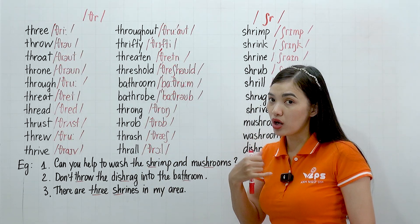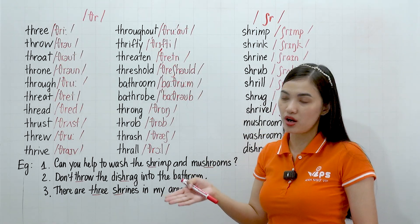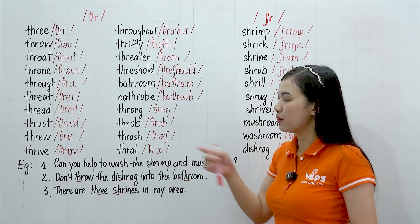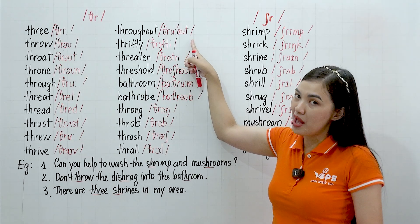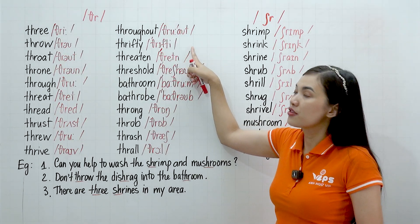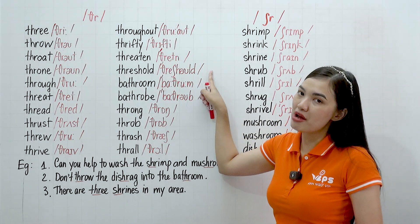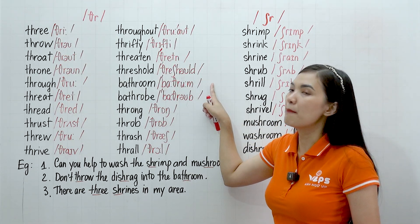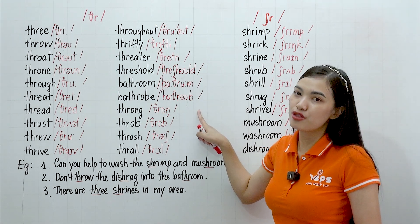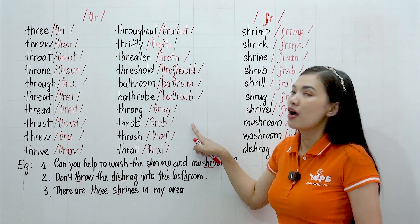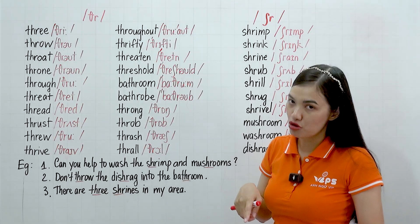Just like: core, tore, s'more, shopping mall. So thrall. Again: throughout, thrifty, threaten, threshold, bathroom, bathrobe, throng, throb, thrash, thrall.